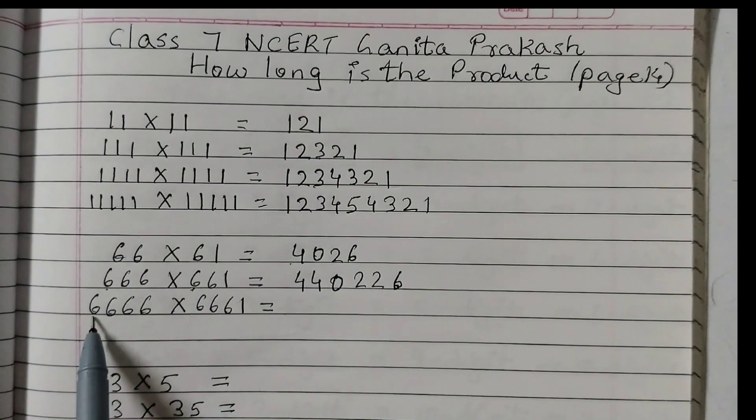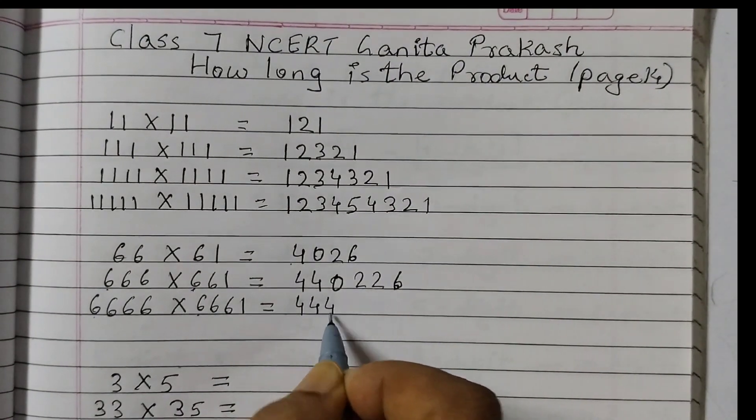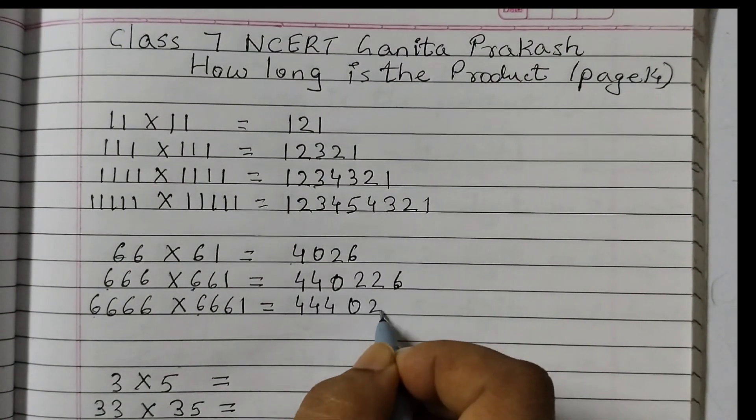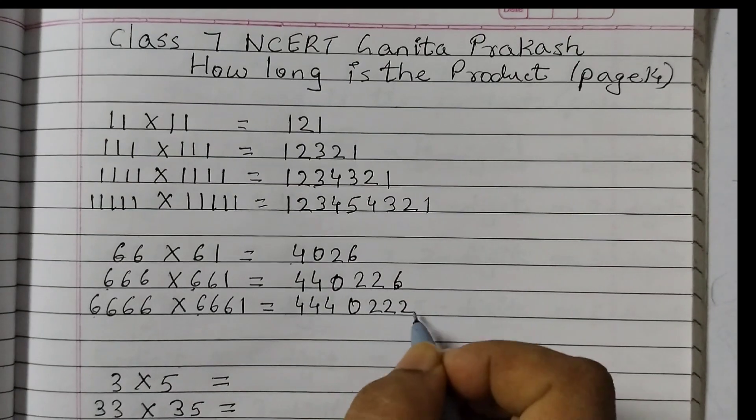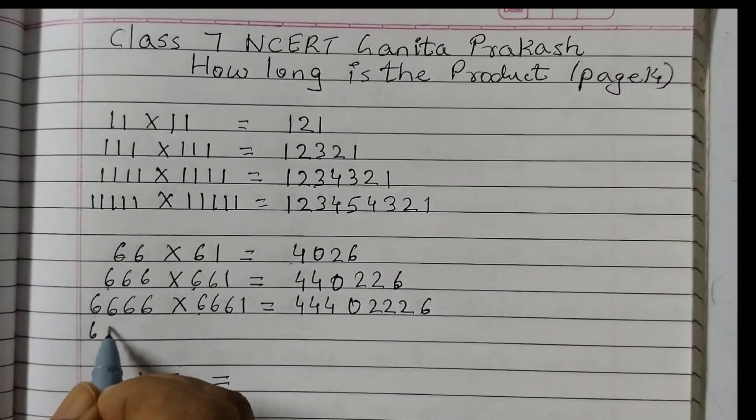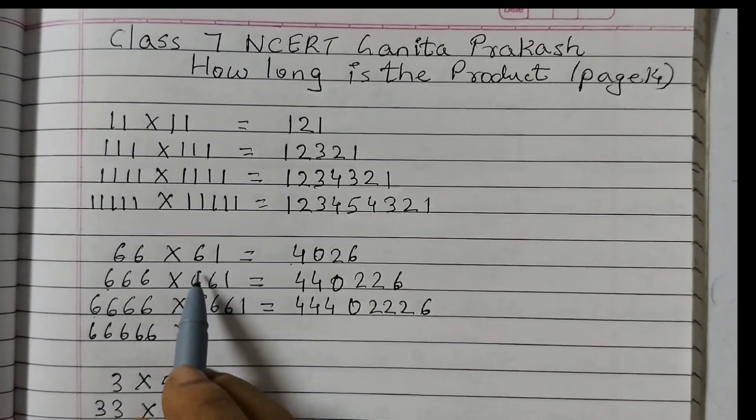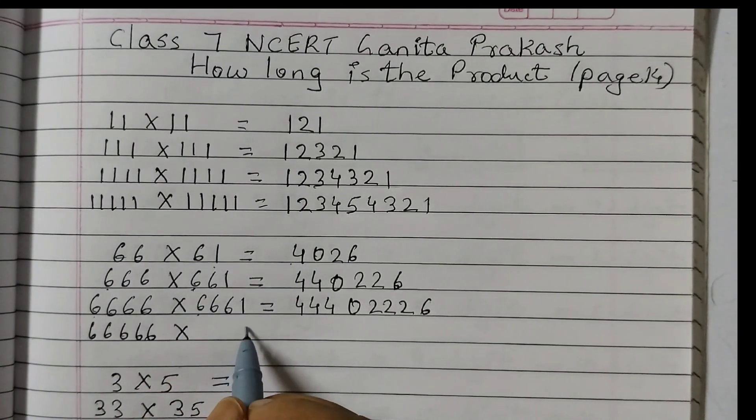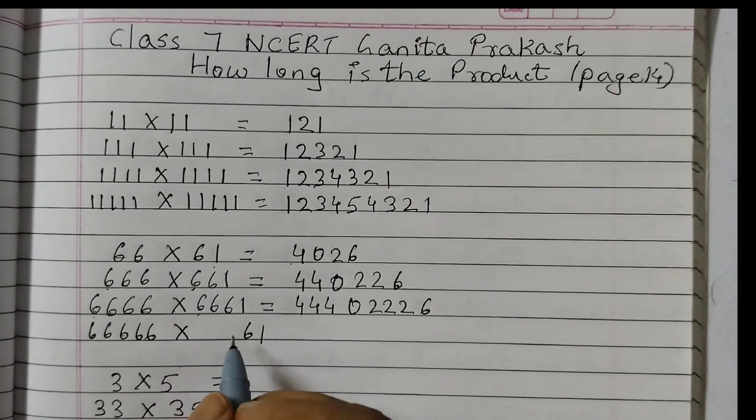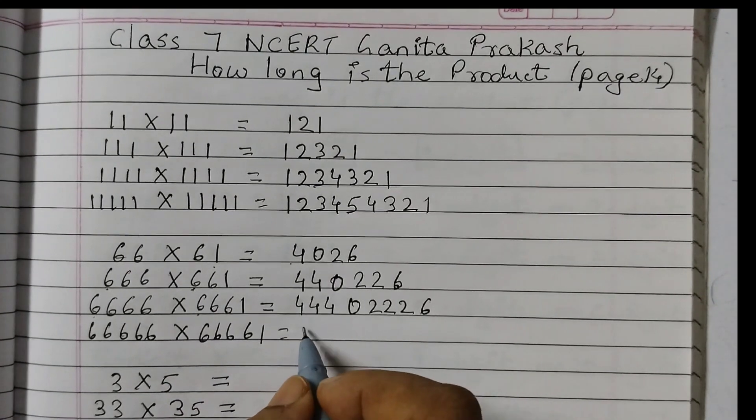So now here another 6 is added. Right? So we will have 444, 02226. If I add one more 6. So 6, 6, 6, 6, 6 times. Here 61 is there. So 61 and we will add 1, 2, 3, 6. One, two, three.